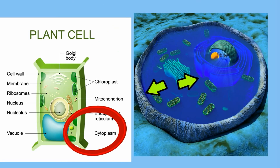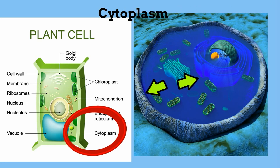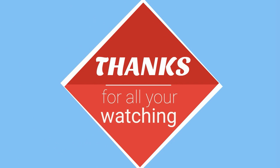In summary, the cytoplasm is a clear, jelly-like substance found in cells that contains nutrients and salts. It helps give the cell its shape and helps the cell move materials about.